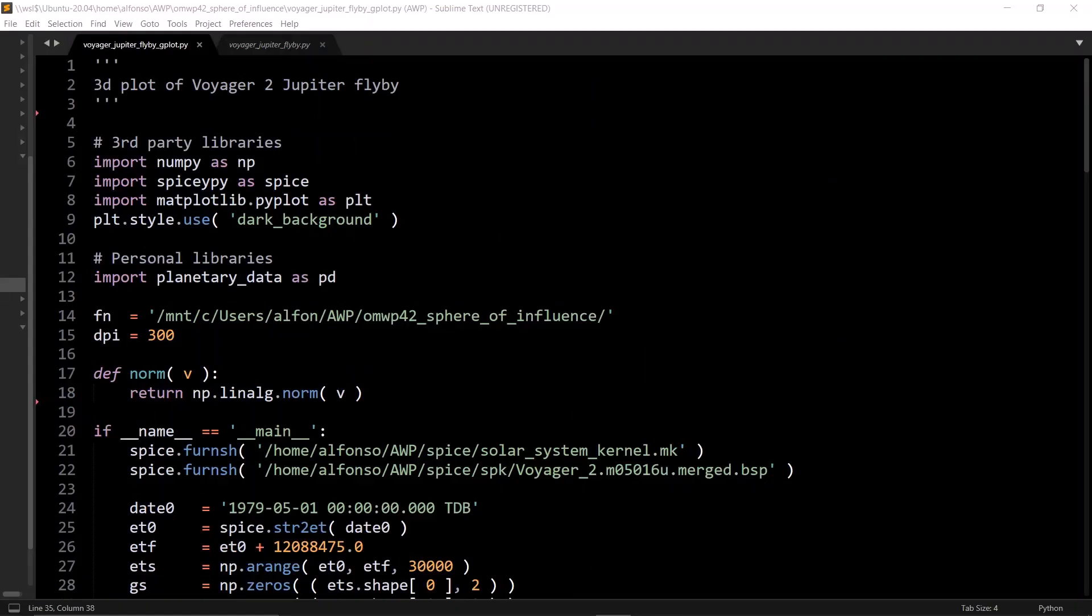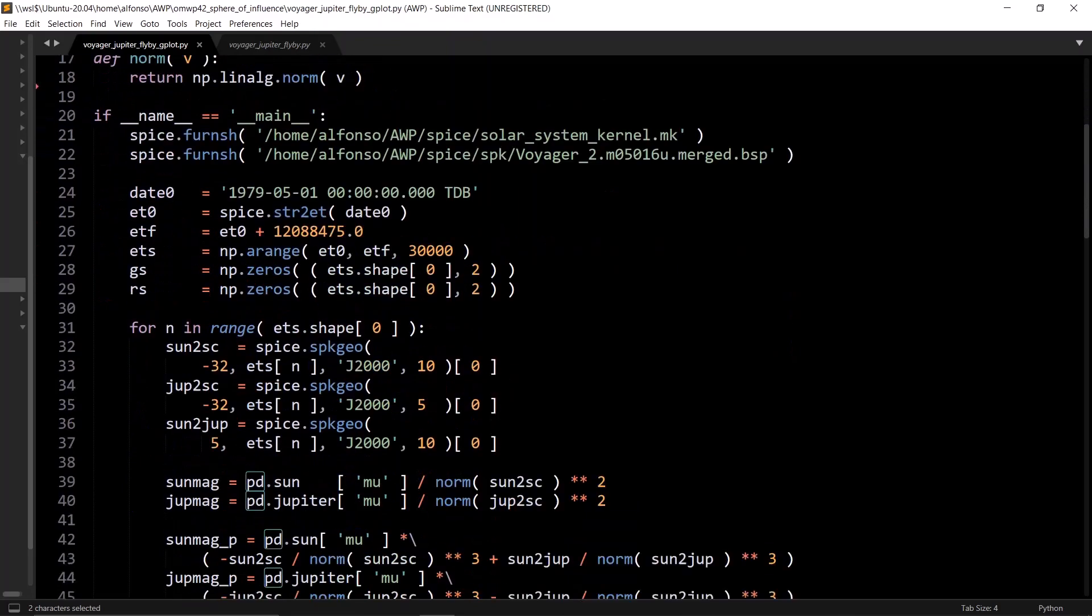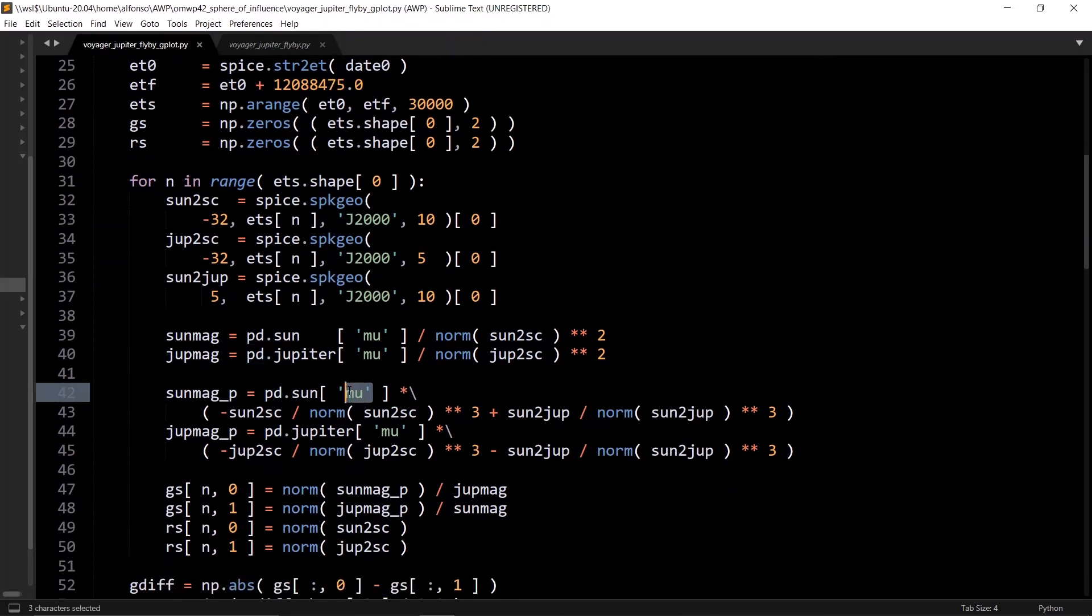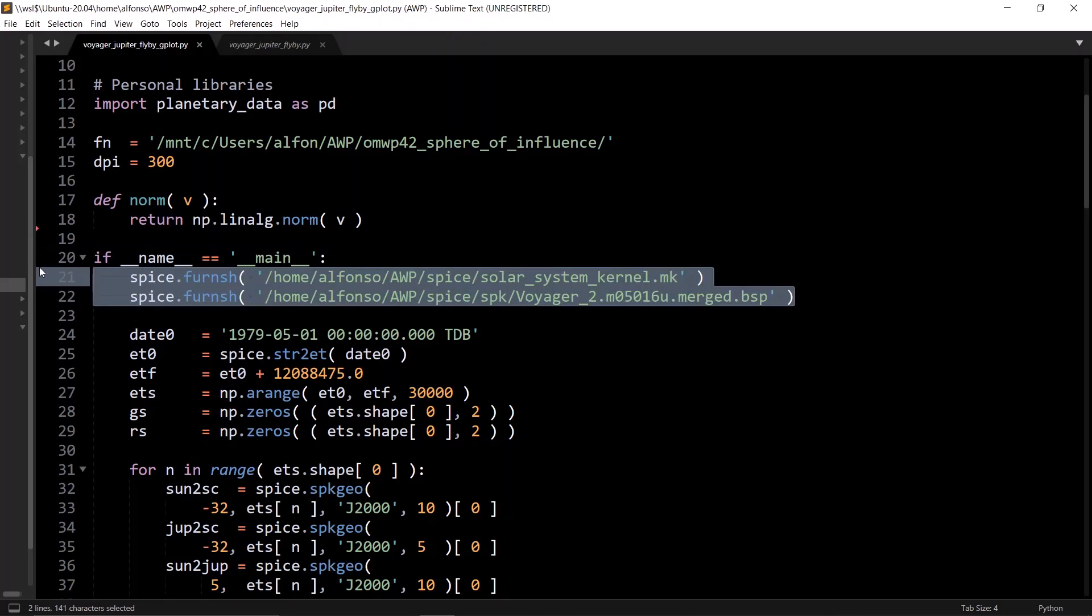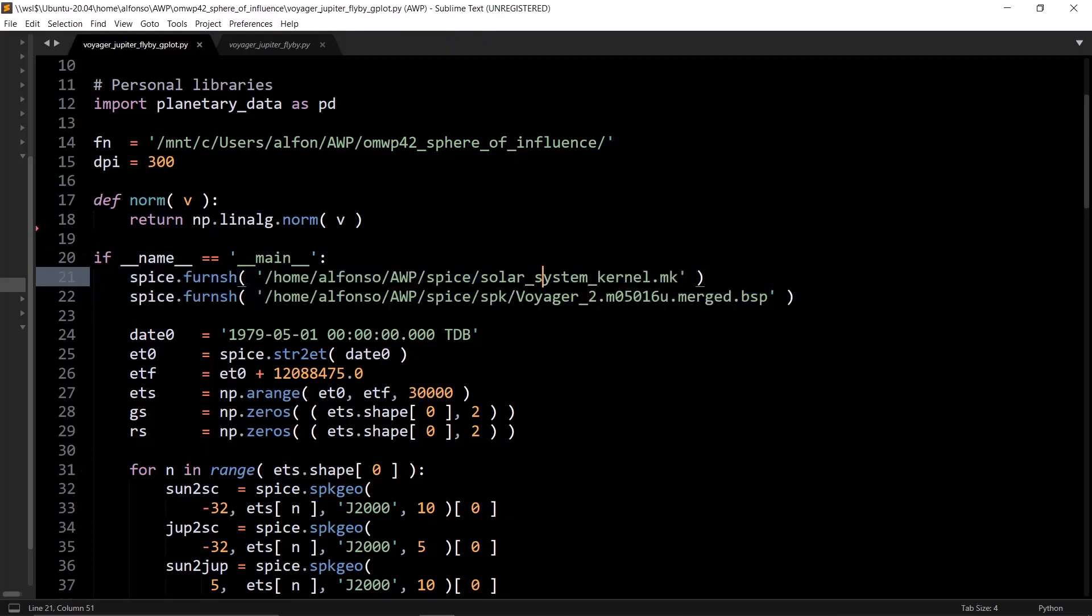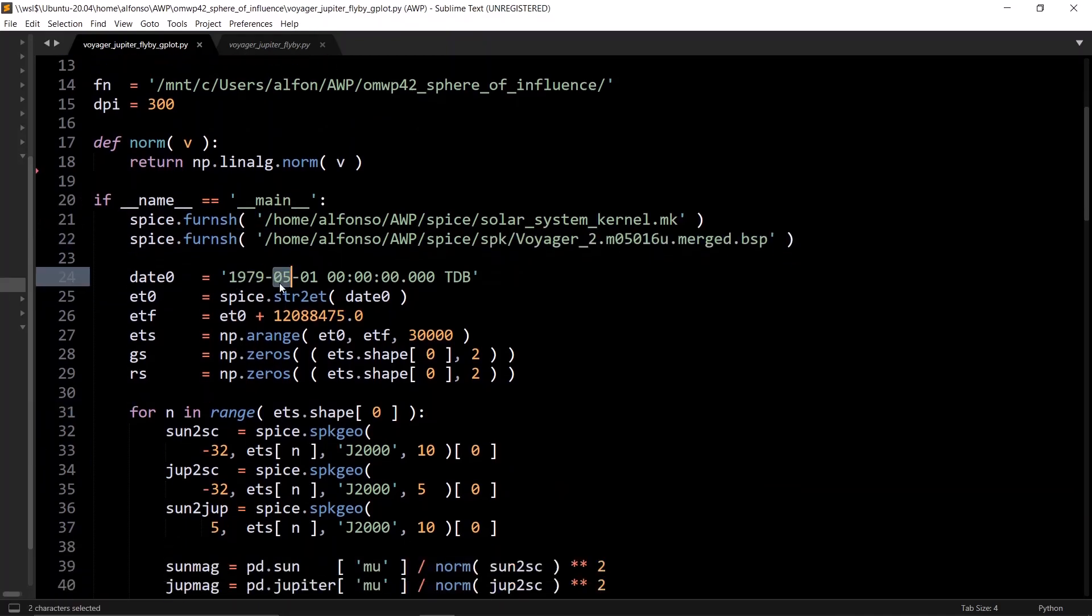Here is the Python script that I use in order to create that ratio plot. We have the typical imports: NumPy, SpiceyPy, and Matplotlib. Planetary data I just need to get in order to get the mu values of the Sun and Jupiter. We start out by furnishing the necessary spice kernels, which the solar system kernel just has a leap seconds kernel, and then d432s.bsp in order to get the positions of Jupiter over time. JPL has published the Voyager 2 and Voyager 1 BSP kernel, so I'll have a link in the description where you can find that.